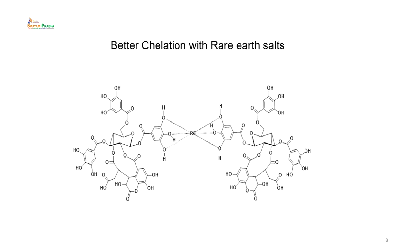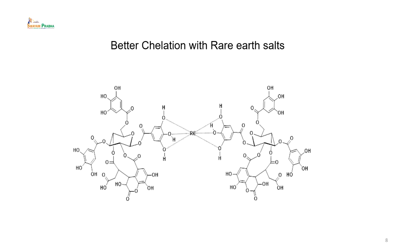Better chelation with rare earth salts. Rare earth salts are better chelators because they can expand their coordination number as compared to aluminum, alkali earth metals or transition metals. Transition metals can have a coordination number of two, but rare earth metals can expand to four to five coordination numbers, which is an added advantage for chelation of metal ions with the colorant molecule. A rare earth salt can have a six-combining capacity as shown in this diagram.